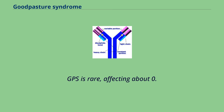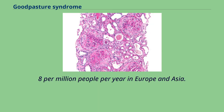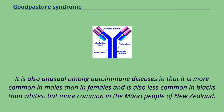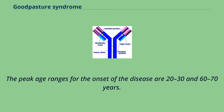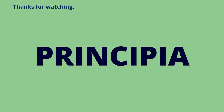GPS is rare, affecting about 0.5 to 1.8 per million people per year in Europe and Asia. It is also unusual among autoimmune diseases in that it is more common in males than in females and less common in blacks than whites, but more common in the Maori people of New Zealand. The peak age ranges for the onset of the disease are 20-30 and 60-70 years.